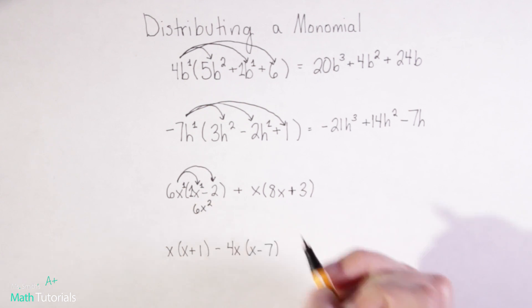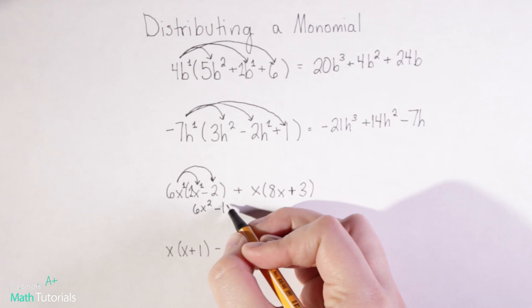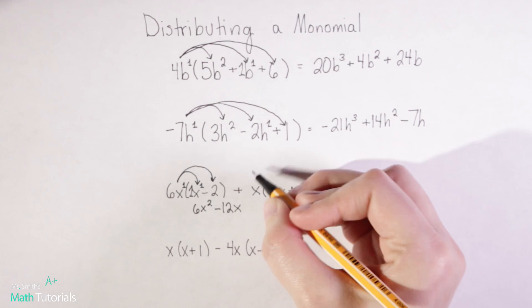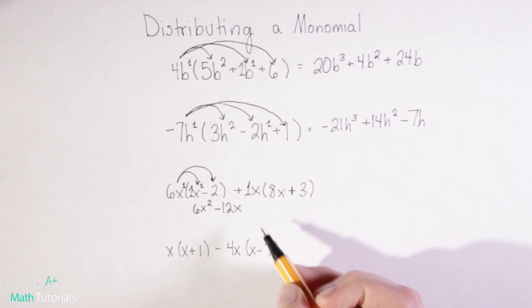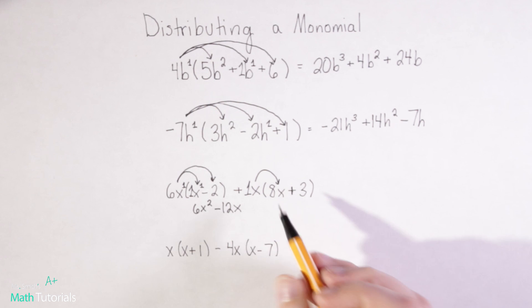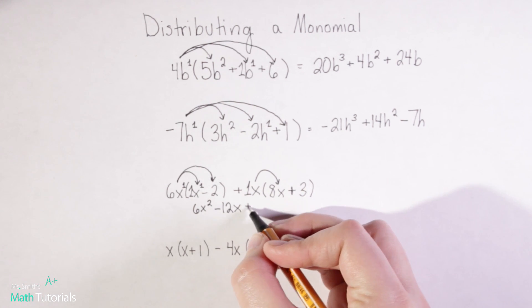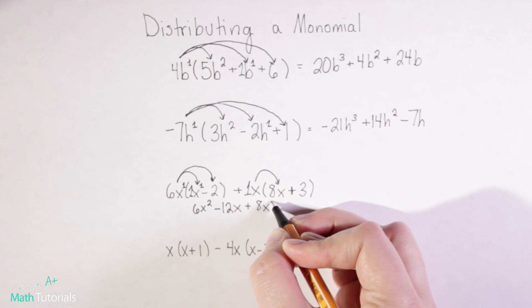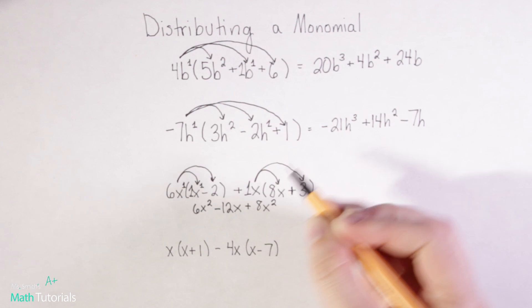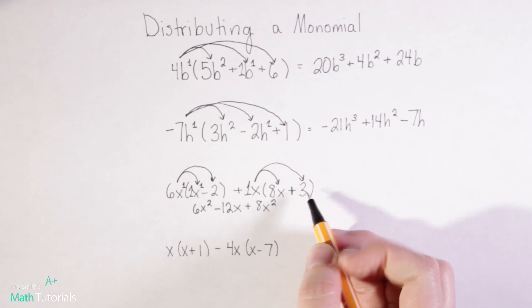Keep distributing. So 6x times negative 2 is going to be negative 12x. So now we've got a positive, and always remember there's an understood one there, positive 1x. Over here I need to do the same thing and distribute it into these parentheses. So x times 8x would be positive 8x squared. Distribute again. X times positive 3 is just going to be positive 3x.